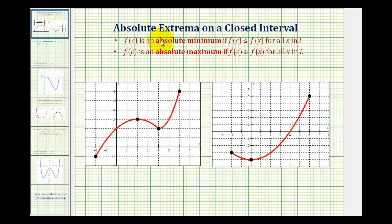To determine the absolute extrema on a closed interval, we want to determine the largest function value and the smallest function value for all values of x in the interval. One of the biggest differences between absolute extrema and relative extrema is that absolute extrema can occur at the endpoints of the closed interval. So to determine the largest and smallest function value, we'll have to evaluate the function at the critical numbers as well as the endpoints of the interval.